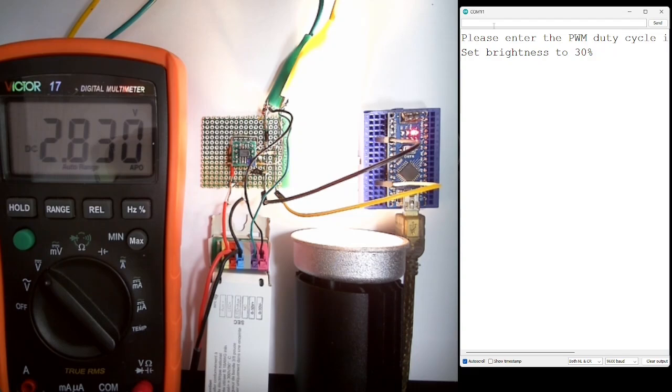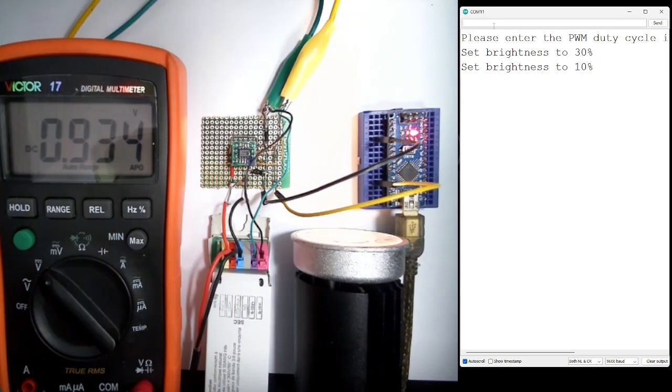Now if I set the PWM to 10%, the output signal is 0.9 volts.